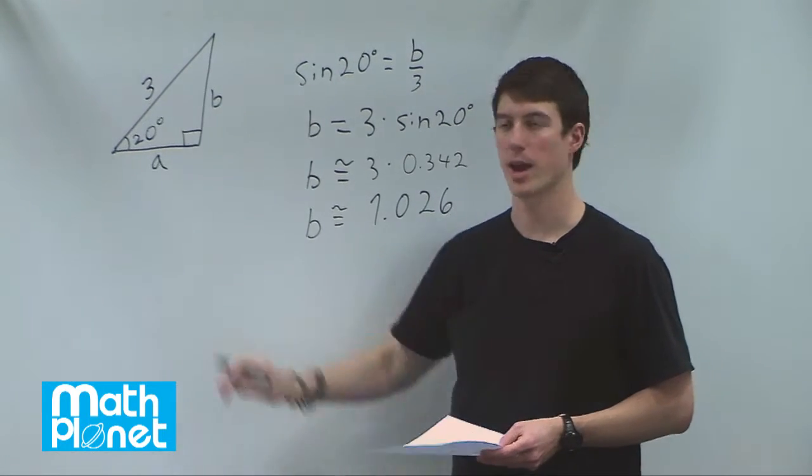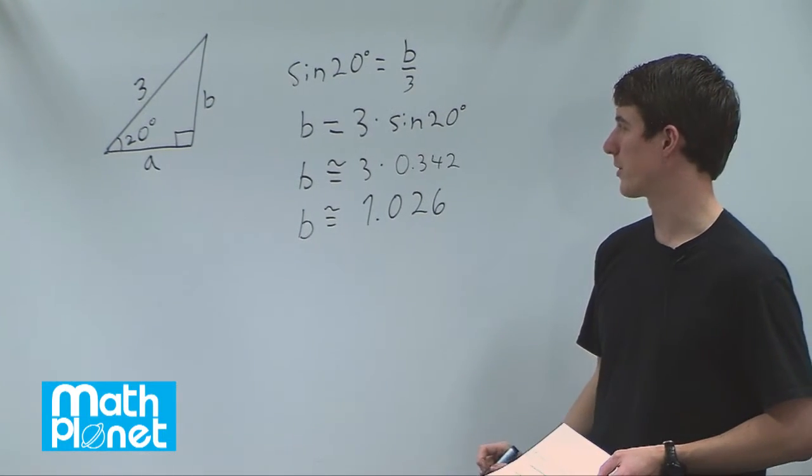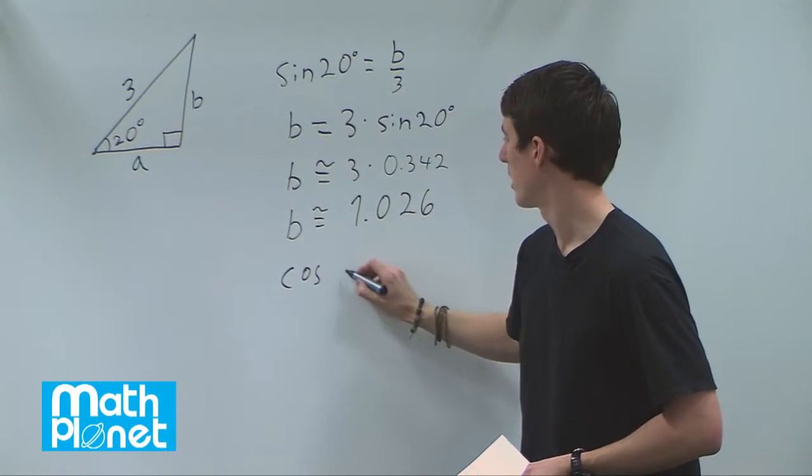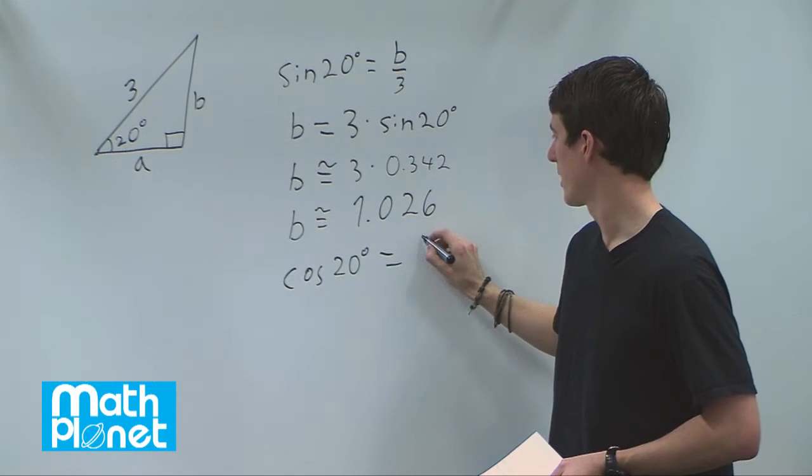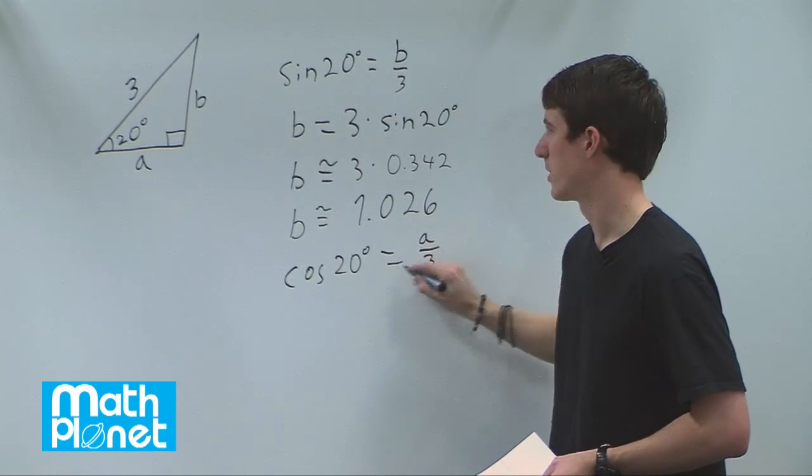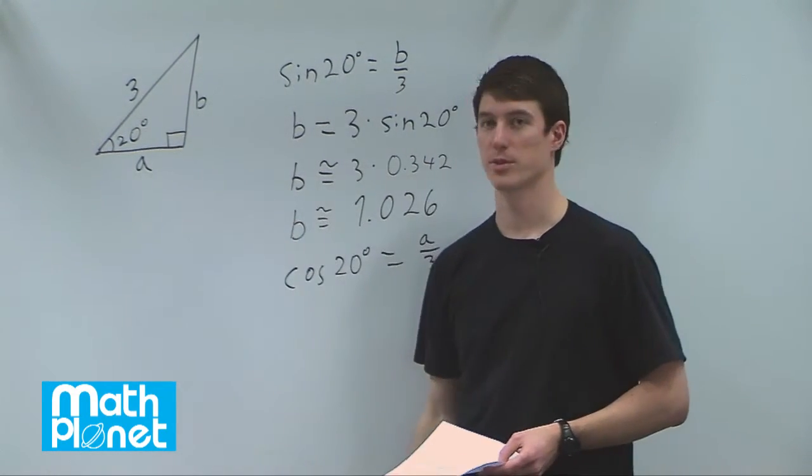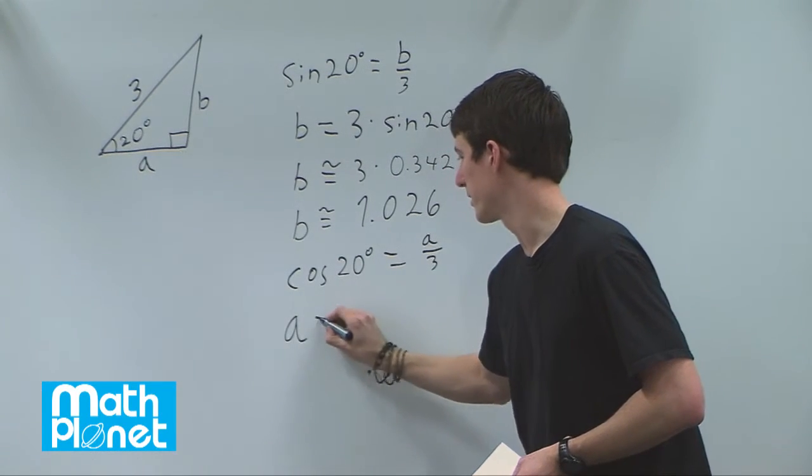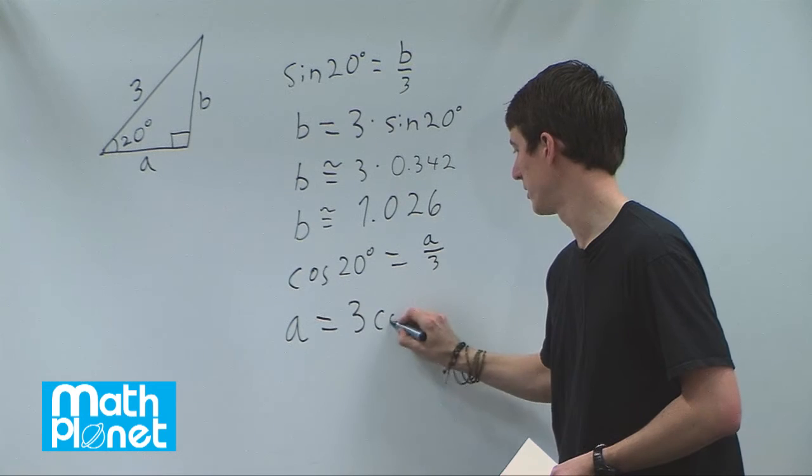Now we can do the exact same thing for a, but that's going to be a cosine function. So let's do the same thing here. Cosine of 20 degrees is equal to a over 3. So adjacent over hypotenuse. So we can again multiply by 3 and we get a is equal to 3 cosine 20 degrees.